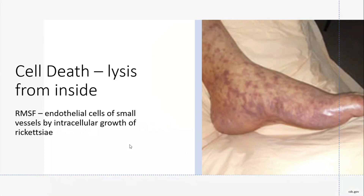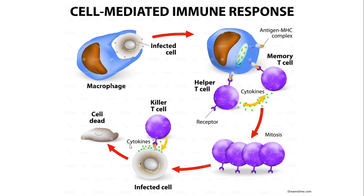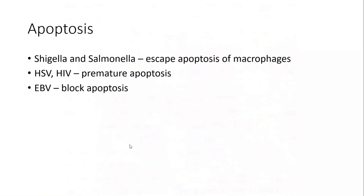Cell death also occurs from lysis from the inside. In Rocky Mountain spotted fever, endothelial cells are damaged by the intracellular growth of rickettsial organisms, and some cells in the endothelium are killed by cytotoxic lymphocytes — which in theory produces the rash. Cell-mediated immune responses occur where infected cells stimulate memory and T-helper cells, releasing cytokines. In Shigella and Salmonella infections, these organisms escape macrophage apoptosis to survive, while HSV and HIV induce premature apoptosis, and EBV blocks apoptosis.